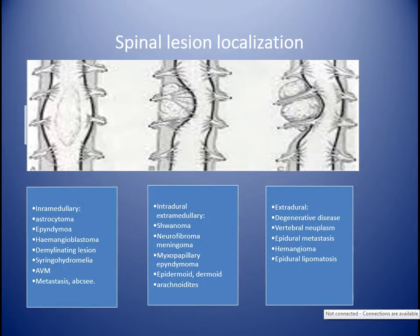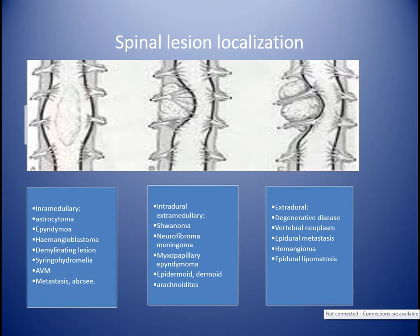We have to localize the spinal lesion into intramedullary, intradural extramedullary, and extradural. Intramedullary means within the substance of the cord. It causes expansion of the cord and reduces the CSF space. The most important here, we have astrocytoma and ependymoma, which make up to 95% of all intramedullary lesions. The other less than 5% will be hemangioblastoma, demyelinating lesion, syrinx, rarely arteriovenous malformation of the cord, rarely metastasis and abscess of the cord.